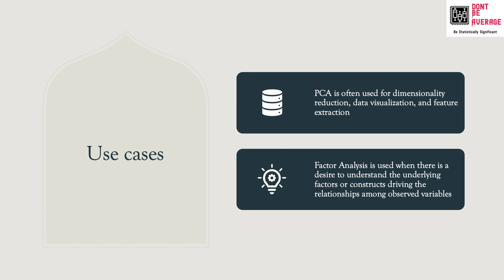In summary, PCA focuses on reducing dimensionality and capturing maximum variance in the data, while factor analysis aims to uncover latent factors that explain the relationships among observed variables. PCA does not provide direct interpretation of components, whereas factor analysis seeks to interpret the factors in terms of observed variables.